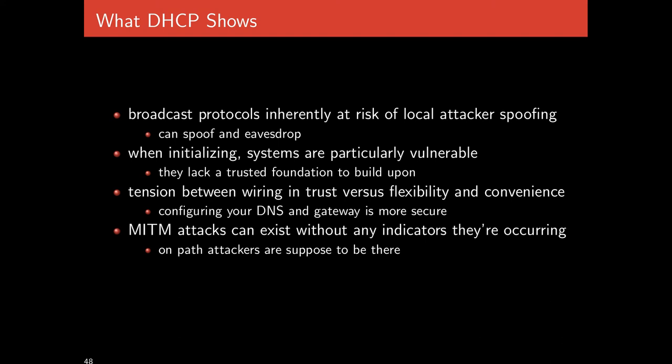With DHCP attacks, man-in-the-middle attacks can happen to users without any indication they're occurring. If Eve misleads Bob about the gateway, Bob will never realize he's put Eve on path for all his network traffic. Similarly, if Bob receives a bad DNS, he has no way of knowing it's not the DNS he should be using, and will implicitly trust the replies he gets even though they may be misleading.